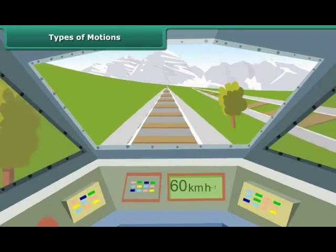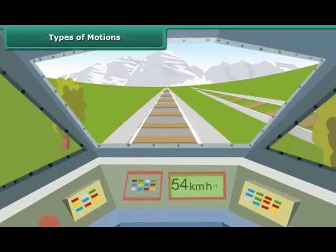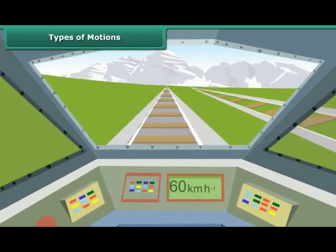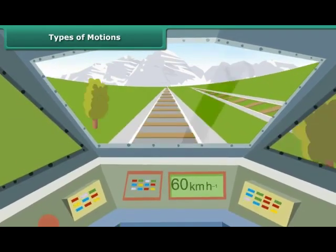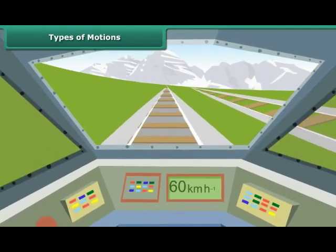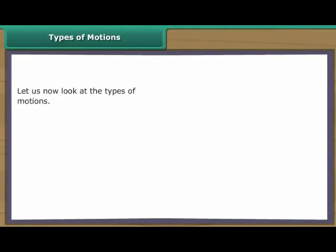Types of Motions. As you know, motion is the change in position of an object with time. The change in its position can be determined through distance measurements. Let us look at the types of motions.